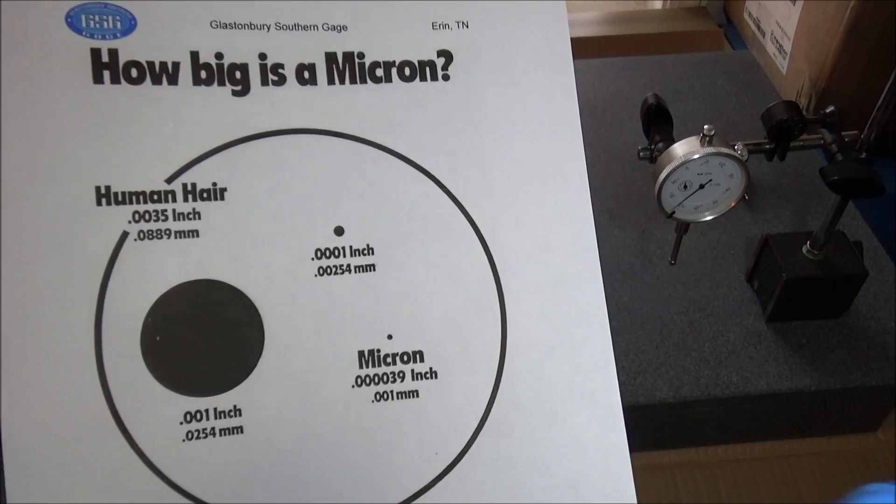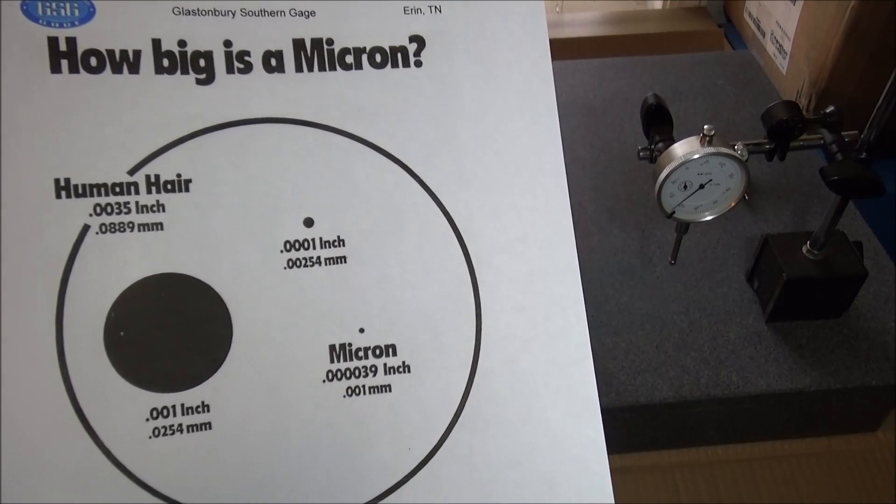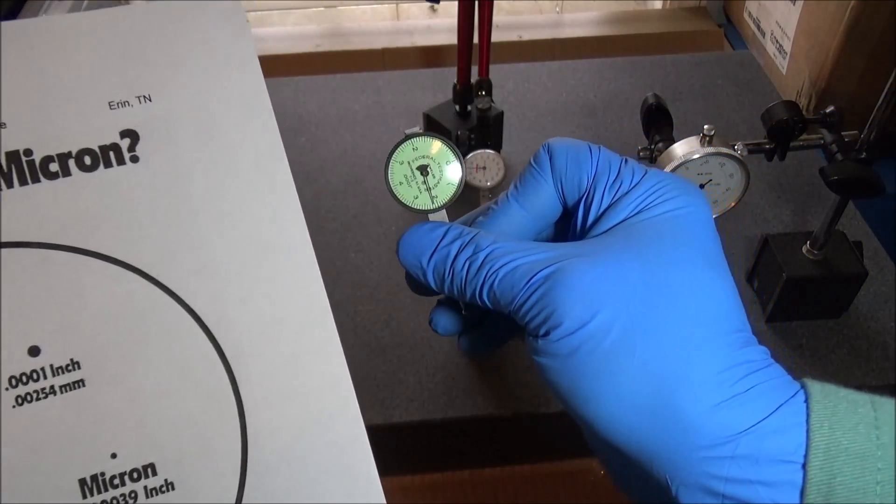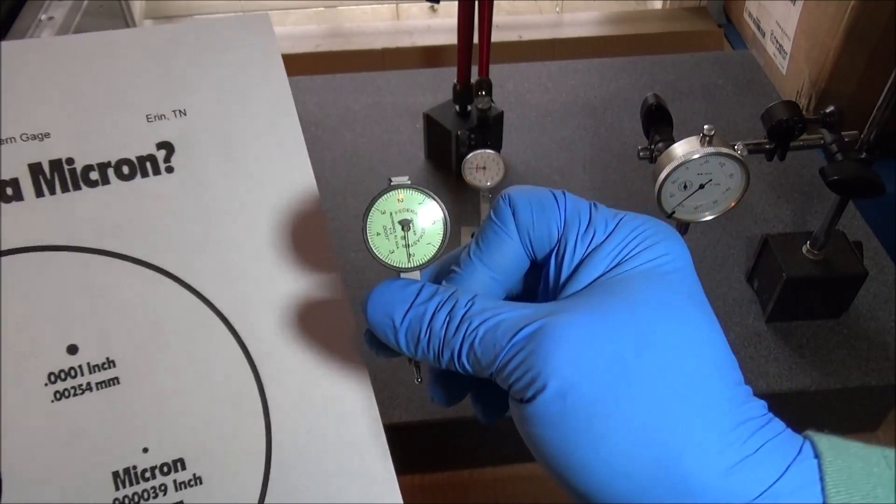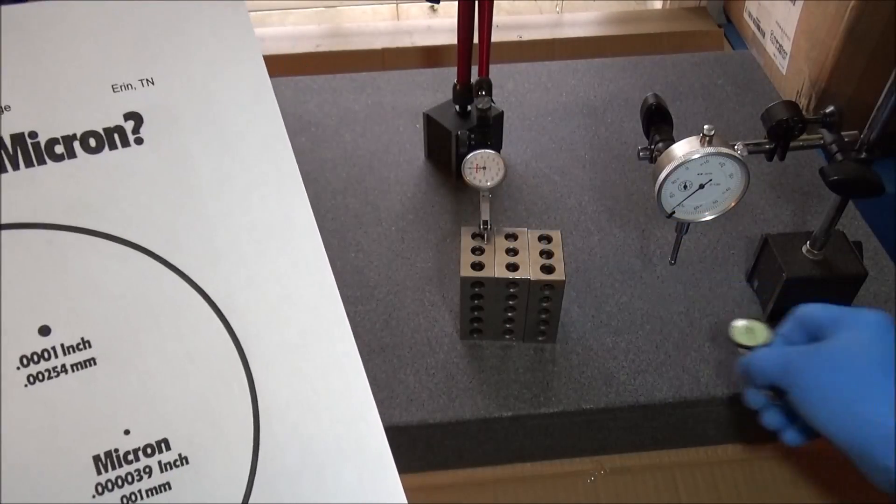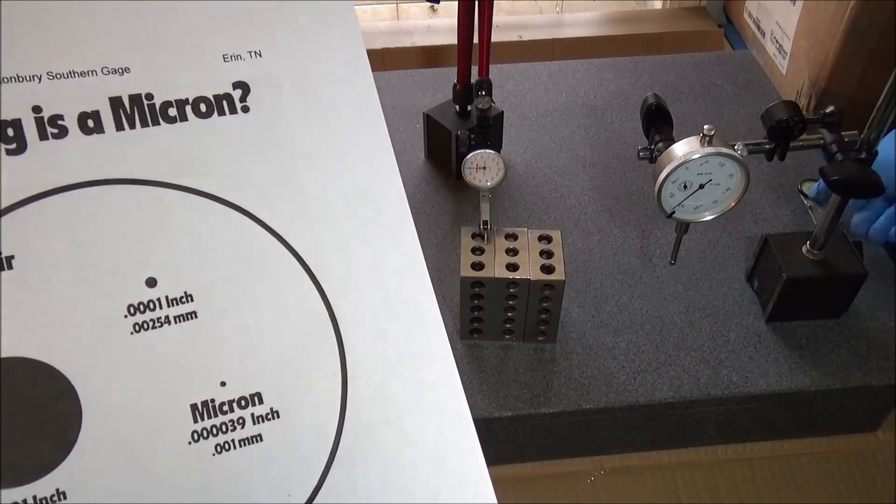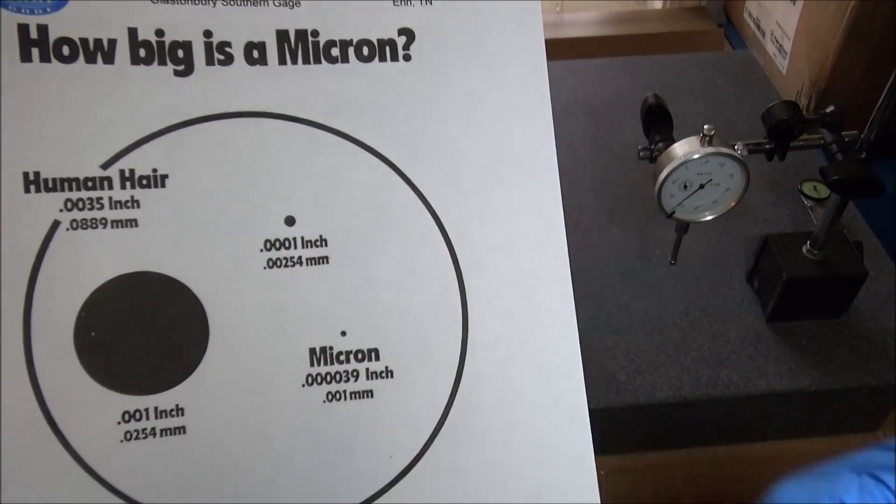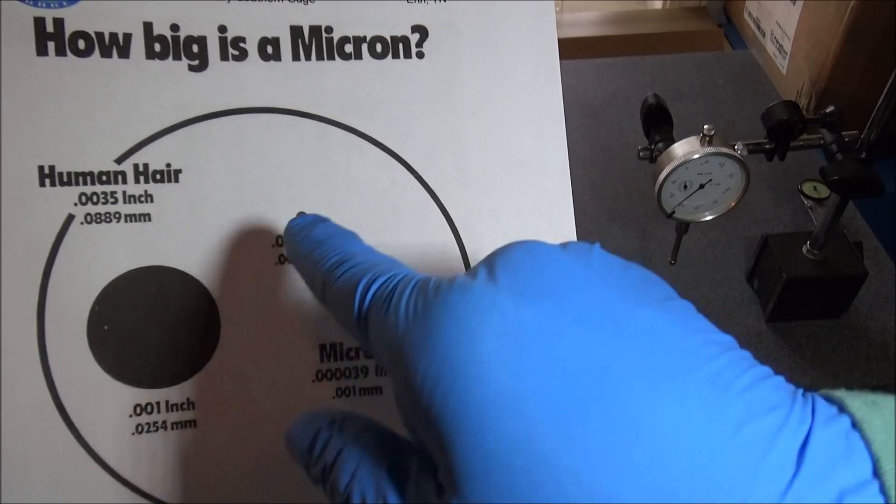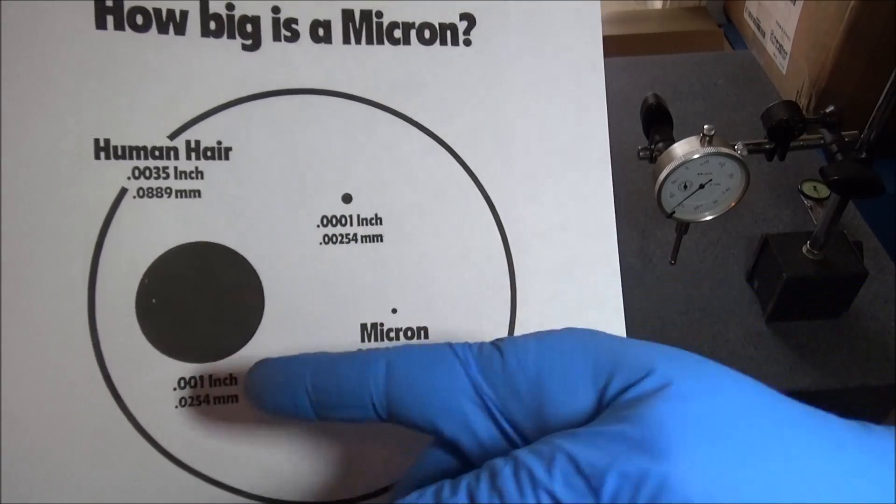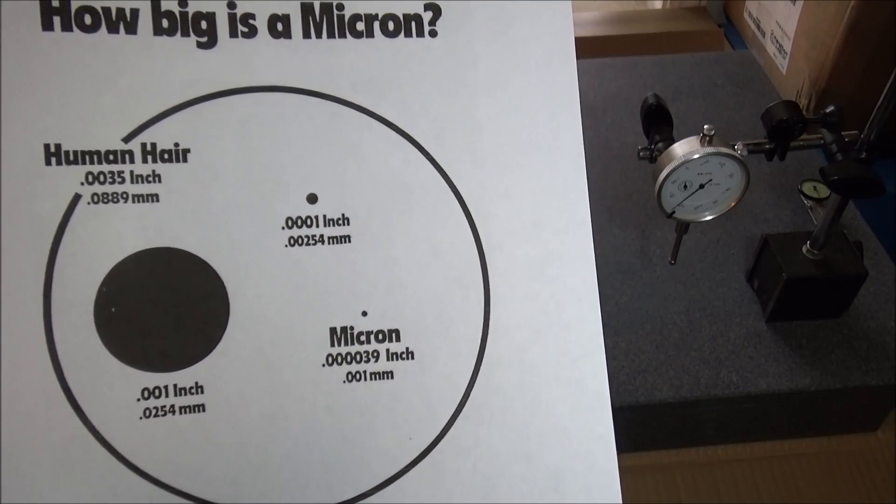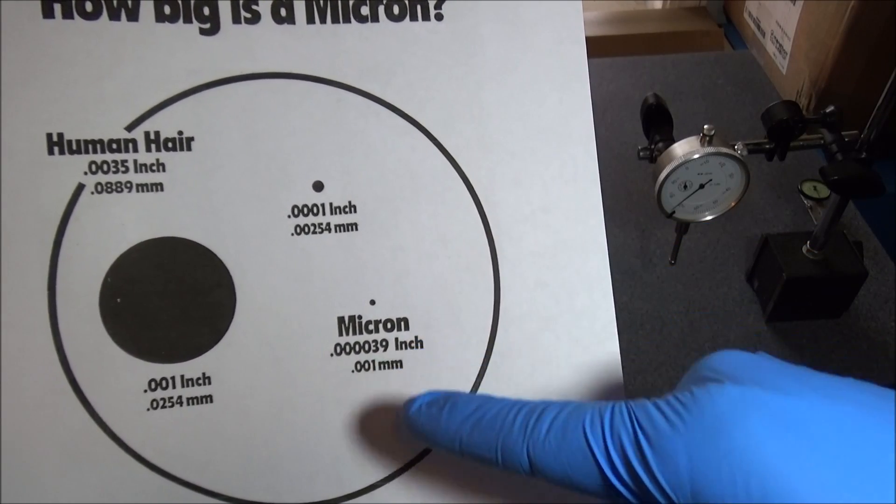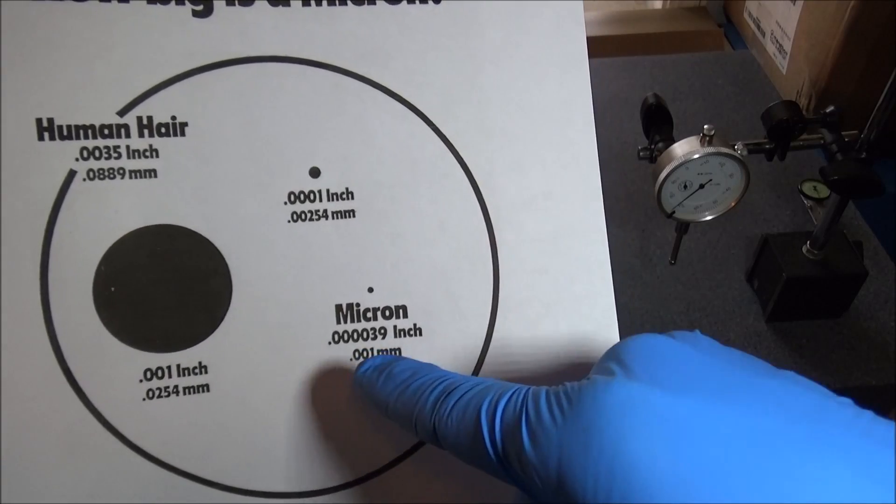My Federal Testmaster which is a tenth of an inch is represented right here. In comparison to even a thousandth of an inch you can see how much smaller that is - it's ten times smaller. Then here we have one micron or 0.001 millimeter.